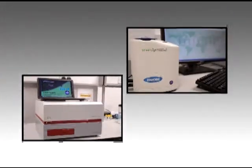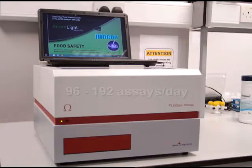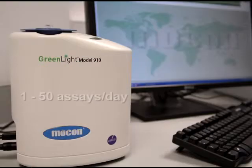Two models are currently available in the Greenlight 900 series. The Greenlight 960, a high throughput model, and the Greenlight 910 for low throughput.